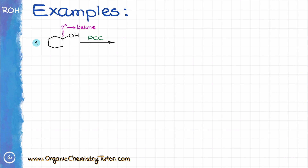The first example is the reaction of cyclohexanol with PCC. This is a secondary alcohol, so from what we've learned, it will be oxidized to the corresponding ketone. To draw the product, redraw the starting material, remove the hydrogen on the oxygen, and make a double bond between carbon and oxygen. Remember: if you're drawing the complete Lewis structure, the hydrogen on the carbon bearing the OH group is also gone — don't accidentally include it.